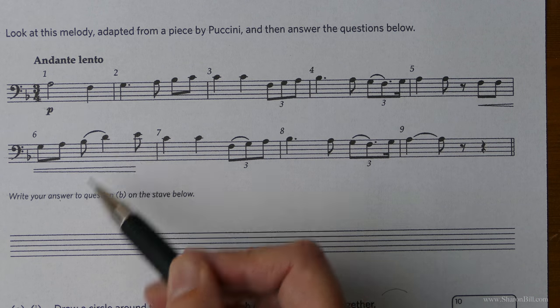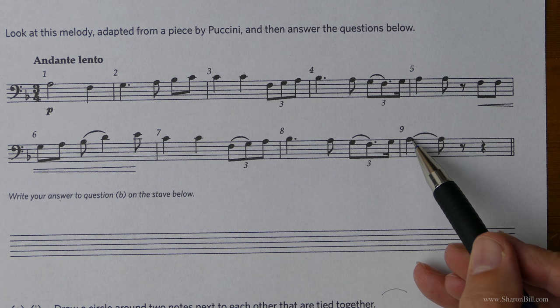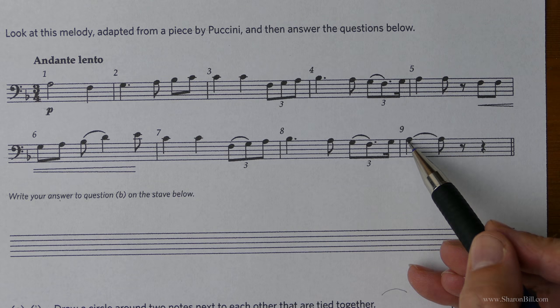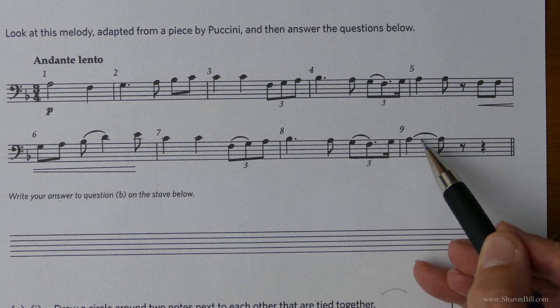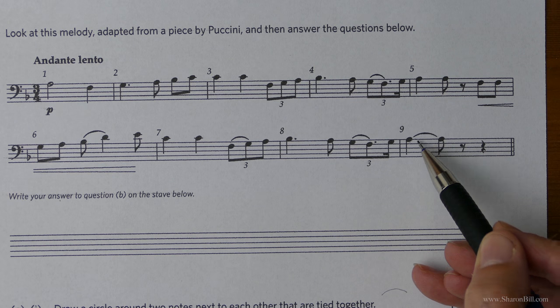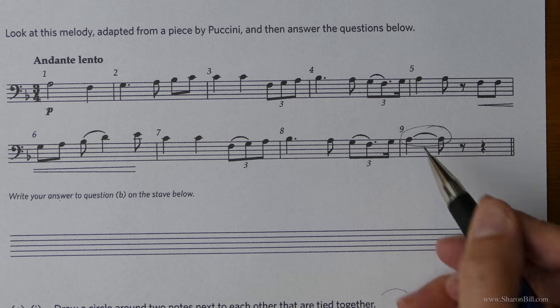Same here, that's a slur, not a tie. So is this. However, here, this is a tie because it's a note head to next door note head. Both are the same pitch and so we're combining those note values together to make the note last longer. So that's the one that we need to circle.